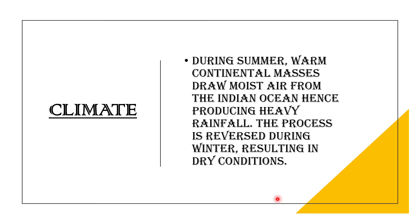What is the climate of the Indian Ocean? During summer, warm continental masses draw moist air from the Indian Ocean, hence producing heavy rainfall. The process reverses during winter, resulting in dry conditions. So during the summer it's really warm and quite rainy, but during the winter it's super dry.